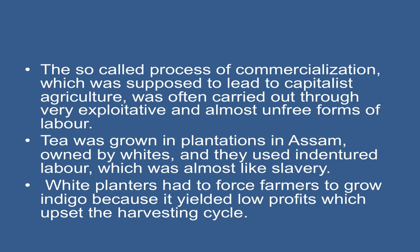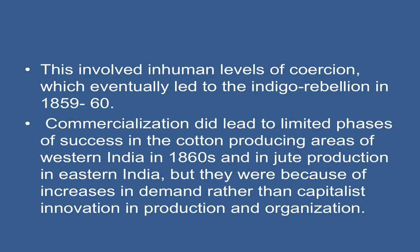The so-called process of commercialization, which was supposed to lead to capitalist agriculture, was often carried out through very exploitative and almost unfree forms of labour. Tea was grown in plantations in Assam owned by whites, using indentured labour which was almost like slavery. Planters had to force farmers to grow indigo because it yielded low profits which upset the harvesting cycle. This involved inhuman levels of coercion which eventually led to the Indigo Rebellion in 1859. Commercialization did lead to limited phases of success in the cotton-producing areas of western India in the 1860s and in jute production in eastern India, but these were because of increases in demand rather than capitalist innovations in production and organization.